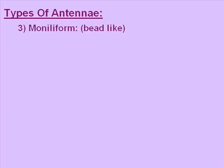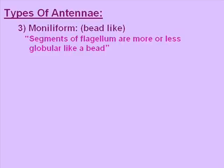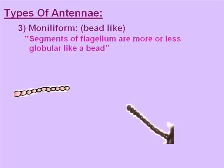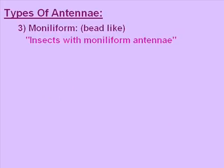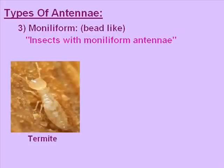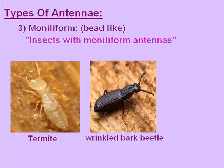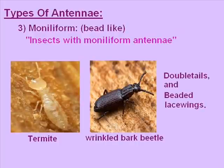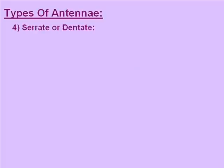The third type is moniliform antenna. Moniliform means bead-like — the segments of the flagellum are more or less globular, like a bead. The picture is showing the moniliform antenna. Insects having moniliform antennae are termites, wrinkled bark beetle, double tails, and beaded lacewings. The fourth type of antenna is serrate or dentate, meaning tooth-like or saw-like structure.